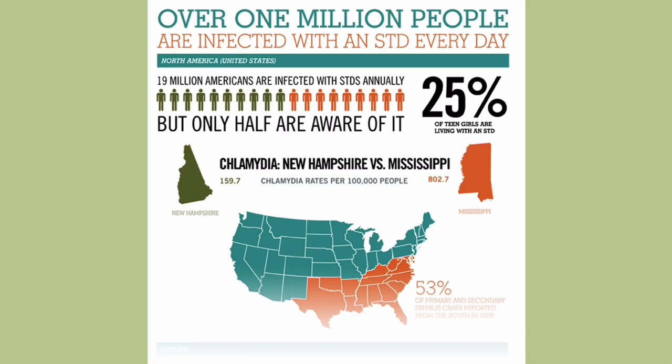Within the United States, there is also geographic disparity, and it kind of follows along the lines of religiosity. I say this as a Catholic, in a church where sex ed is not exactly a popular thing. There is certainly geographic disparity even though these numbers are from 2009. If you compare New Hampshire to Mississippi, you see about five times the rate of STIs.